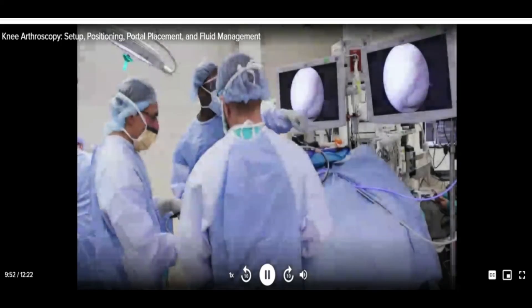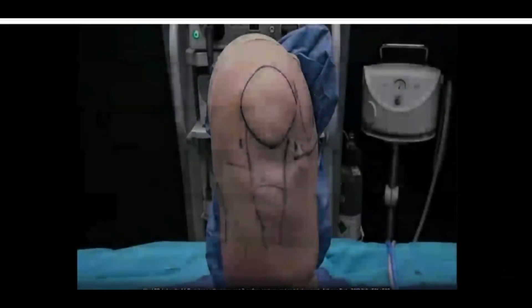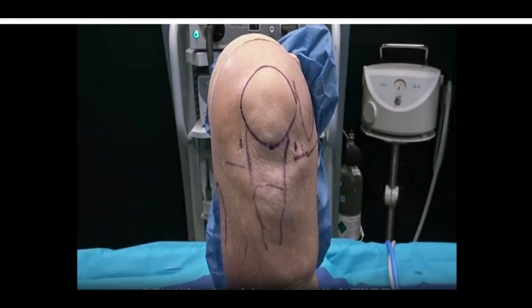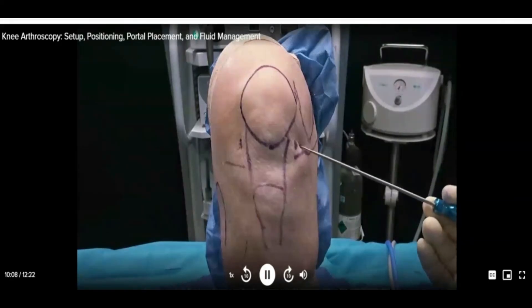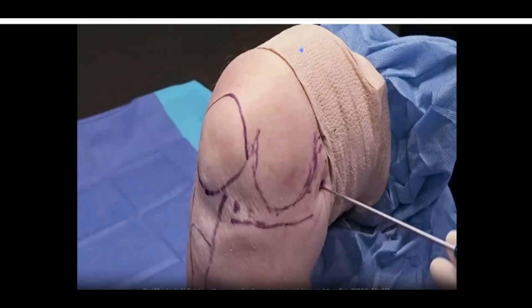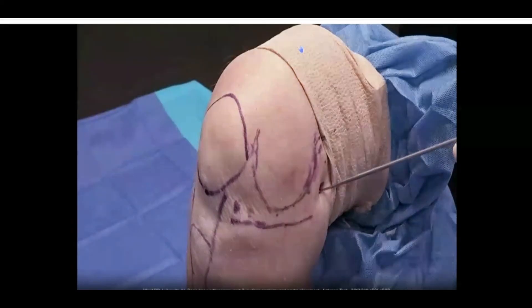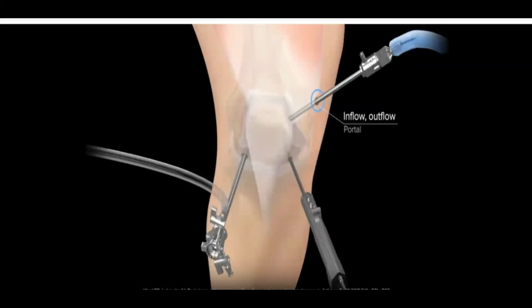While a diagnostic procedure is typically completed with anteromedial and anterolateral portals, there are multiple accessory portals that can be used to aid in various arthroscopic procedures. These include the low anterior portal for certain femoral drilling techniques in ACL reconstructions, the posterior medial portal for visualizing and instrumenting the posterior knee during PCL reconstructions, and an inflow or outflow portal high in the suprapatellar pouch to aid in fluid management.